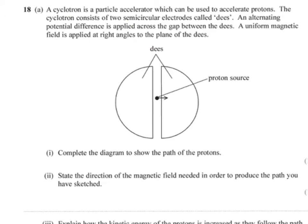Question 18. A cyclotron is a particle accelerator which can be used to accelerate protons. The cyclotron consists of two semicircular electrodes called D's. An alternating potential difference is applied across the gap between the D's. A uniform magnetic field is applied at right angles to the plane of the D's. Complete the diagram to show the path of the protons.